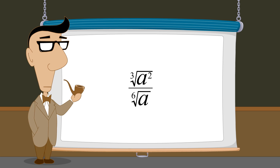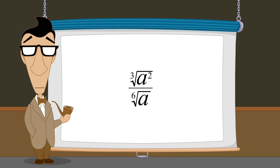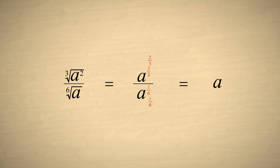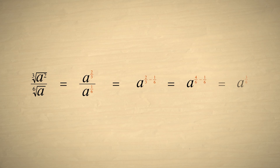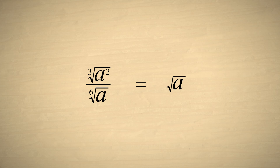Let's do one more example, simplifying the cube root of a-squared over the sixth root of a. We can start by writing the cube root of a-squared as a to the two-thirds, and the sixth root of a as a to the one-sixth. We then subtract the exponents two-thirds and one-sixth. Using the common denominator six, we can write this as four-sixths minus one-sixth, which is three-sixths, or one-half. Of course a to the one-half is the square root of a. So the cube root of a-squared over the sixth root of a can be simply written as the square root of a.